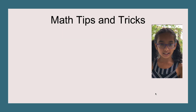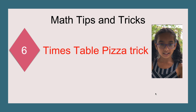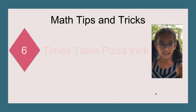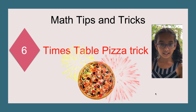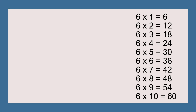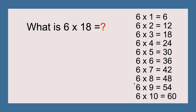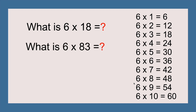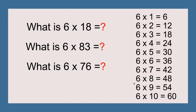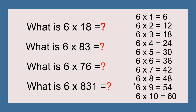In this one we're going to do the six times table pizza trick. How about we get started? So I'm pretty sure that everyone knows six times one, six times ten, and everything in between. But sometimes I have questions like, what is six times eighteen? And what is six times eighty-three? And what is six times seventy-six? And even, what is six times eight hundred and thirty-one?